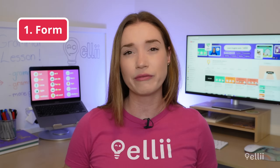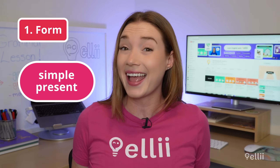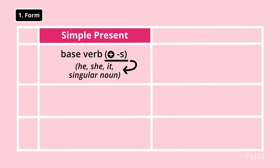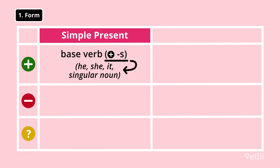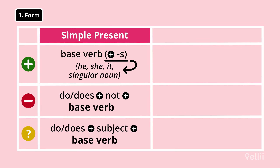Let's start with the form for each verb tense. How do we conjugate the simple present and the present progressive? In the simple present tense we use the base form of the verb, but we need to add the S ending when the subject is he, she, it, or a singular noun in affirmative sentences only. In negative sentences and questions we use the auxiliary verb do, which becomes does when the subject is he, she, or it. The main verb stays in the base form.